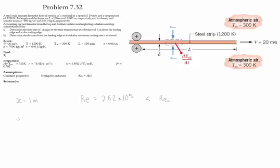For the local value of the Nusselt number in laminar flow, we use equation 7.23: the Nusselt number equals 0.332 times the Reynolds number to the one-half times the Prandtl number to the one-third. This is valid because the Prandtl number is greater than 0.6. Using this Nusselt number and the given values, we get the convection coefficient at x equals 1 meter to be 8.29 watts per meter squared kelvin.